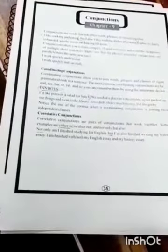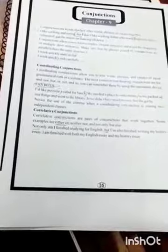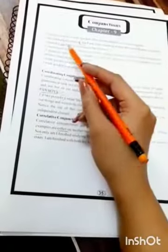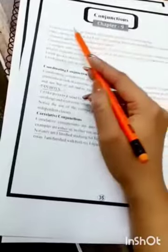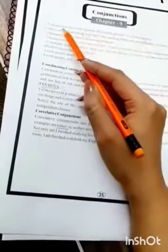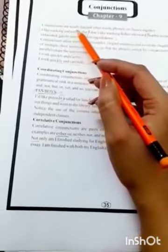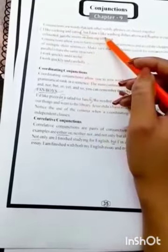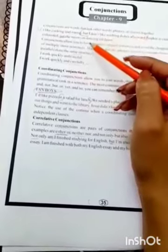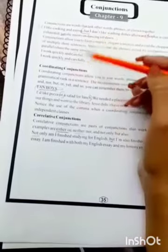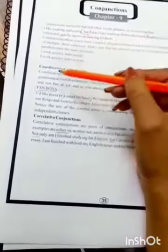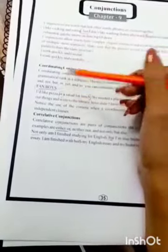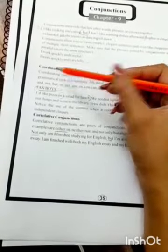Grade 7, today we will be continuing with our lecture on conjunctions. Yesterday we read pages 35 and 36, where we read about what conjunctions are and what the different types of conjunctions are. We learned that conjunctions are words that link words, phrases, or clauses together.